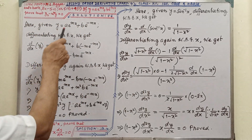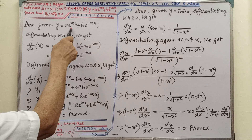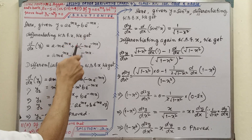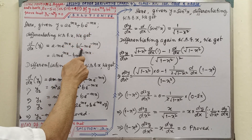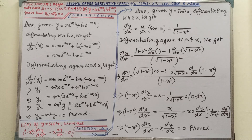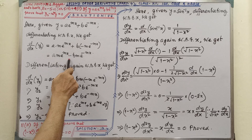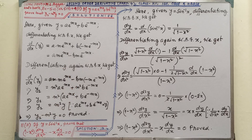Now y1, by differentiating: 'a' is a constant and differentiation of e^(mx) is m·e^(mx). Here 'b' is constant and differentiation of e^(-mx) is −m·e^(−mx). So we get y1 = am·e^(mx) − bm·e^(−mx).